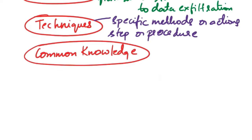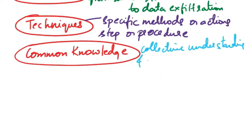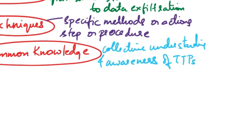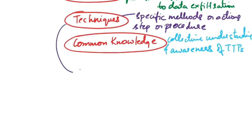Common knowledge refers to the collective understanding and awareness of the TTPs commonly used by cyber adversaries. It includes shared knowledge and insights gained from analyzing real-world cyber attacks, threat intelligence reports, incident response activities and security research. Under techniques there are also sub-techniques, which further break down specific variations or nuances of a technique, providing additional detail for understanding adversary behavior in different contexts.